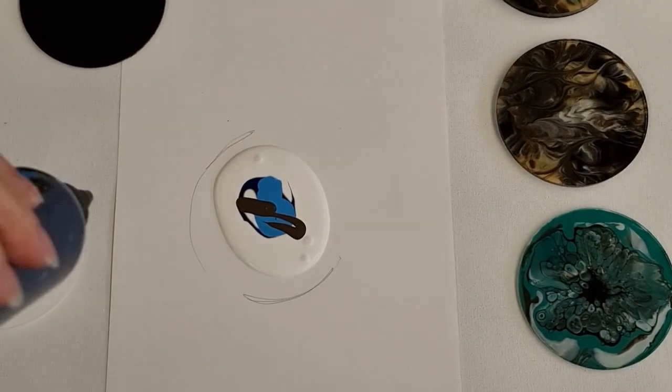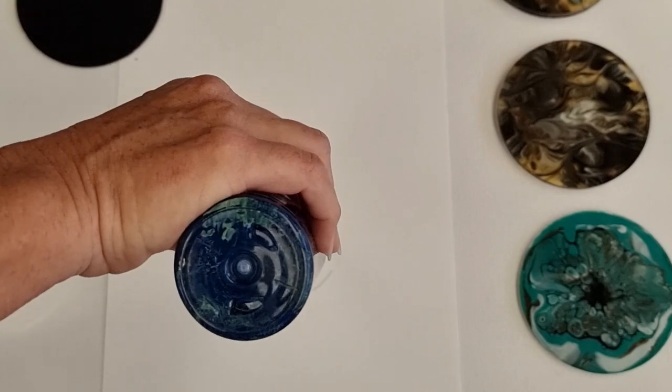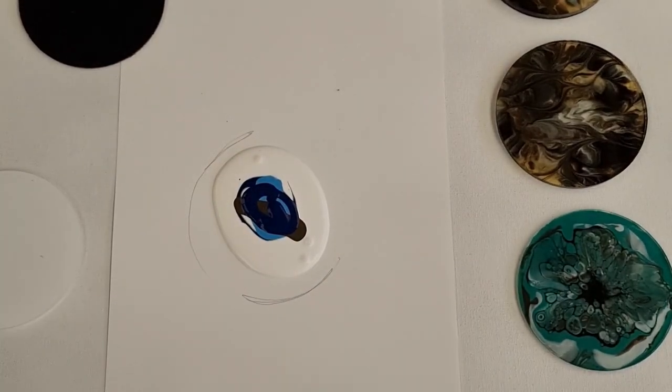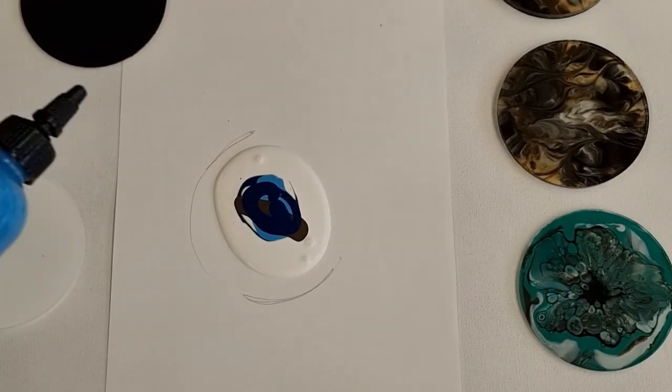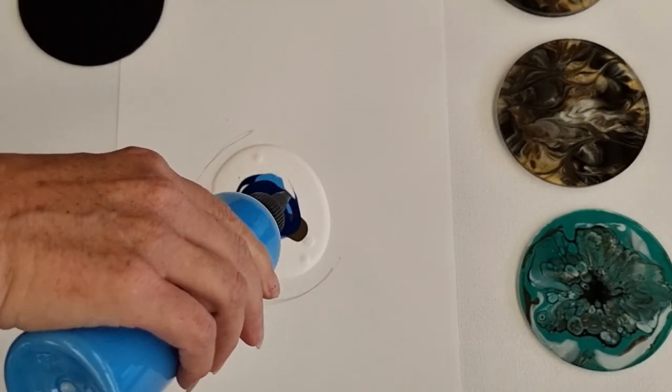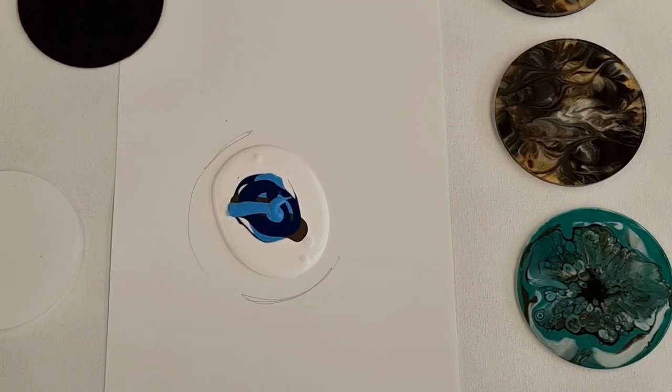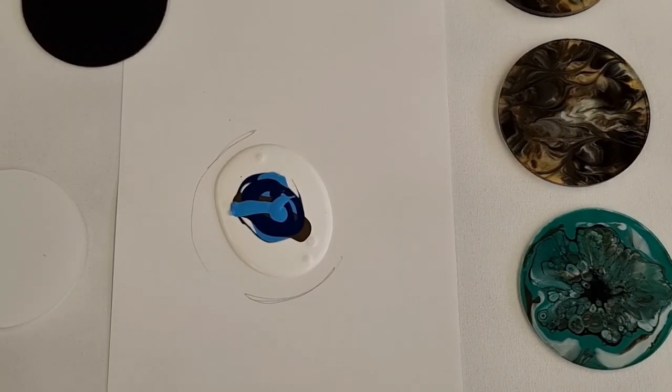And I'm just going to layer some more on top of that. So like I said, I could do a bloom, I could do whatever, but we're just doing a simple puddle pour and getting some movement happening and then going to dip our disc into it.